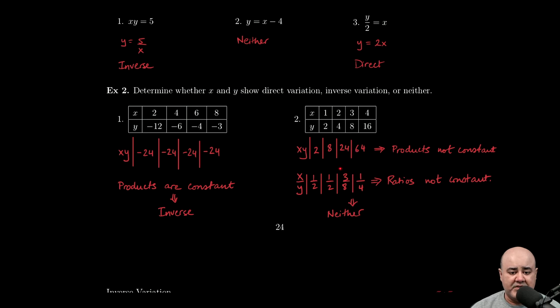If the ratios are not identical, then we do not have direct variation. So since the products were not constant, we don't have inverse. Since the ratios are not constant, we don't have direct. Therefore, these are neither direct variation nor showing inverse variation.